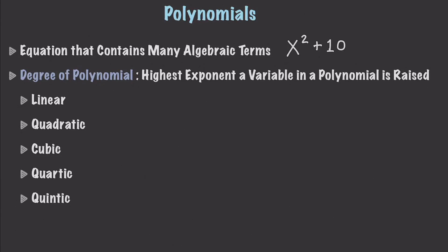The quadratic part of this comes from what we call the degree of a polynomial. To figure out what you have, you basically just take the highest exponent a variable in the polynomial is raised. For example, a linear polynomial would be something like x plus 10. This would be considered degree 1 because x is to the power of 1.